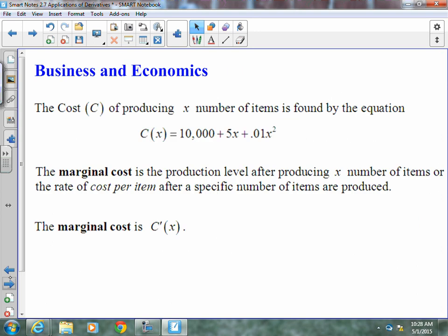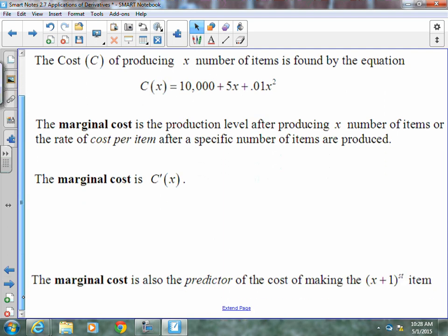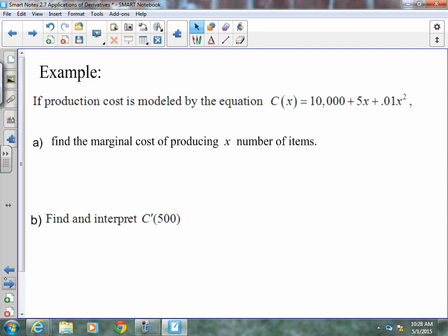Finally, some business and economics. The cost C of producing x number of items is found by the equation C(x) = 10,000 + 5x + 0.01x². The marginal cost is the production level after producing x number of items or the rate of the cost per item after a specific number of items are produced. The marginal cost is C'(x). It's also the predictor of the cost of making that next item.